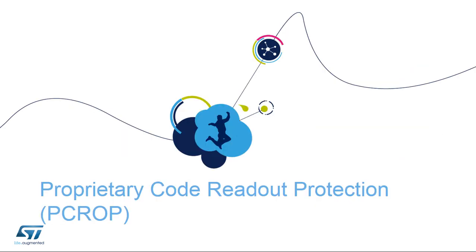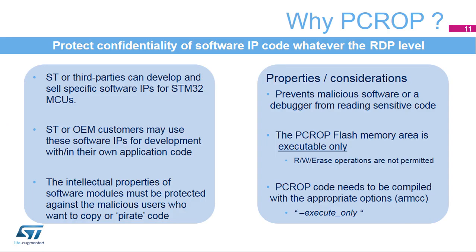Let's take a closer look at the details of Proprietary Code Readout Protection, or PCROP, and how it's different from RDP. PCROP means Proprietary Code Readout Protection. It is basically a way to protect the confidentiality of third-party software intellectual property code independently of the RDP level setting. Third parties may develop and sell specific software IPs for STM32 microcontrollers, and original equipment manufacturers may use them when developing their own application code. PCROP helps protect the confidentiality of third-party IPs against malicious users.